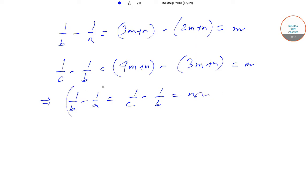So, we can see that 1/a, 1/b, and 1/c are in arithmetic progression. And if 1/a, 1/b, and 1/c are in A.P., then a, b, and c are in harmonic progression, which is option C.